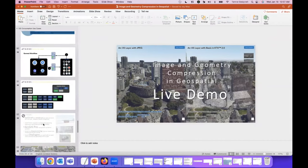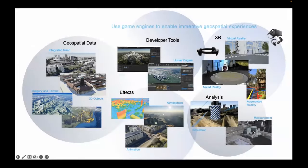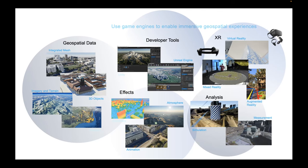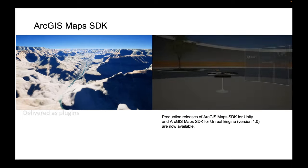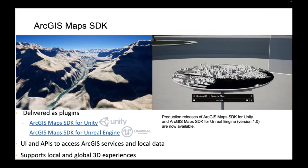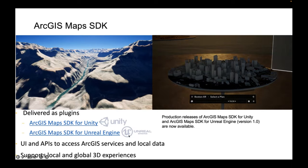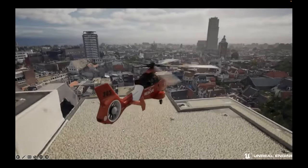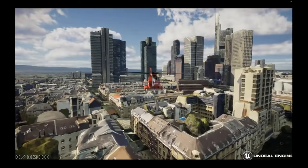One last use case is I3S usage in game engines — a new phenomenon where people want to use geospatial data in game engines to benefit from the rich user experience and effects available on gaming systems. The ArcGIS Maps SDK allows you to support visualizing I3S layers in game engines — both Unity and Unreal game engines are supported. This means you can visualize data you're used to seeing on desktop and mobile systems directly in game engines, benefiting from higher realism.